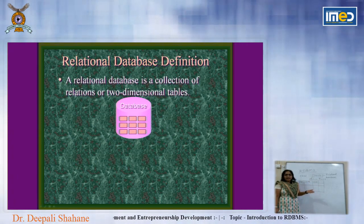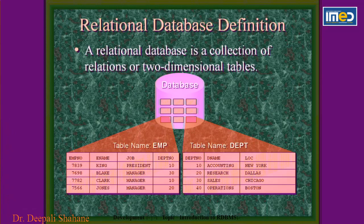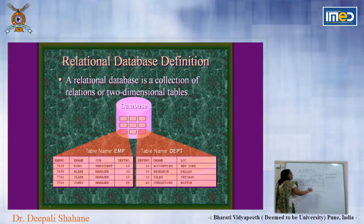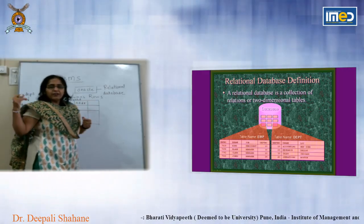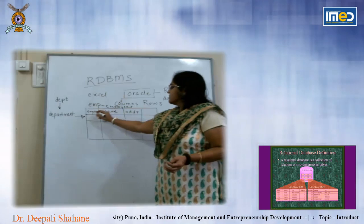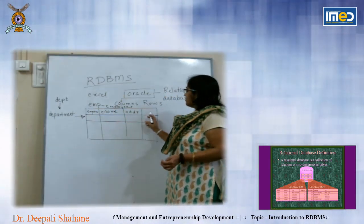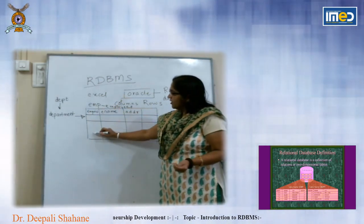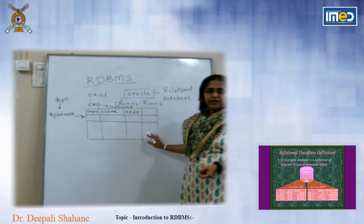Moving to the next slide, we will see how RDBMS works. It works on two-dimensional tables. There are two tables shown: the first is the EMP table and the second is DEPT. DEPT talks about the departments within the organization and EMP is related to the employees. The data of employees as well as different departments will be stored in these two different tables. The tables have column headers and under every column there will be different data elements stored.